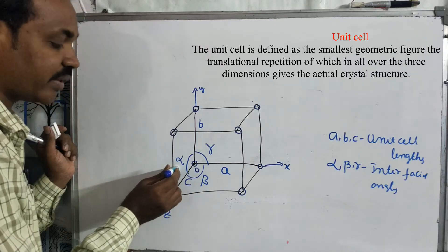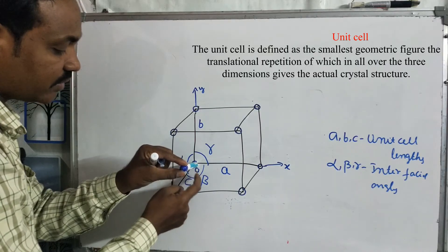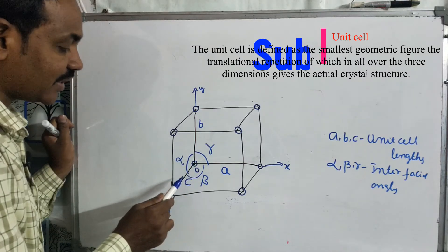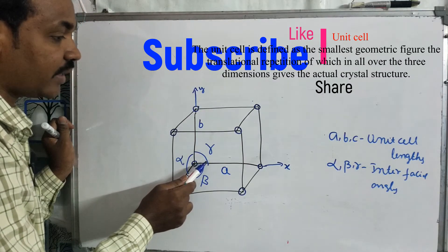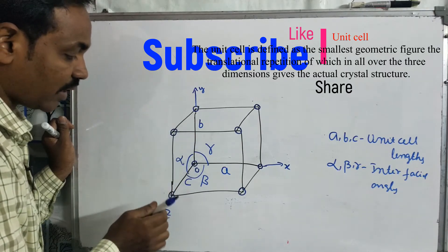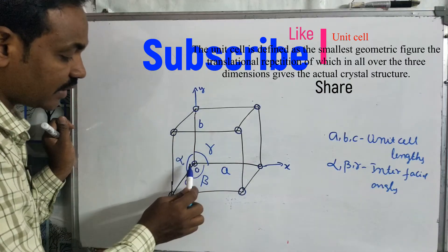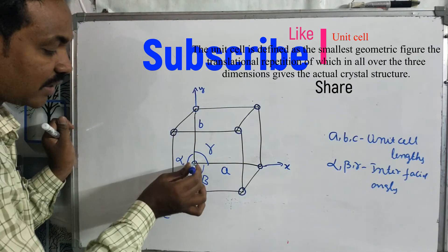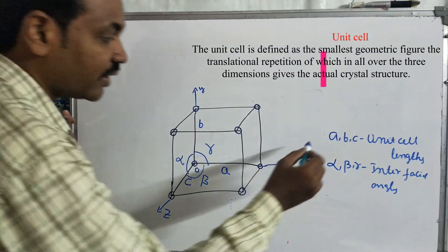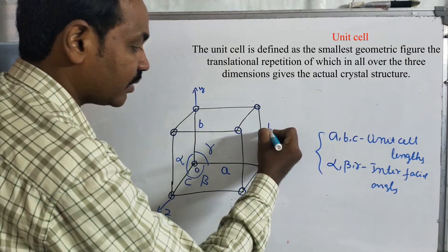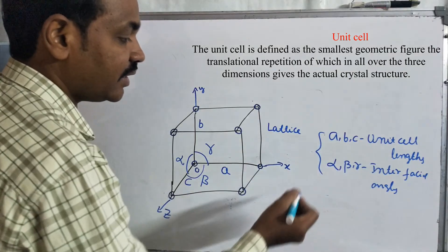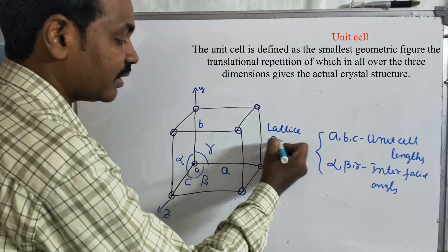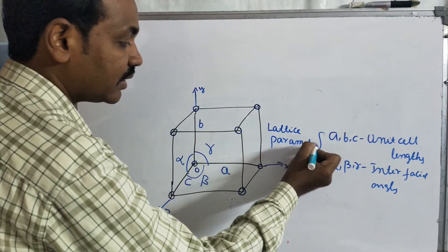We can draw this on the board. There is an angle for this — this angle will take the angle. This axis will take the angle. We can take the axis to the Y-axis. You can see beta and alpha. But gamma is more important. So alpha, beta and gamma are the angles. We have a combination of a, b, c and alpha, beta, gamma — this is the lattice parameter. The a, b, c are the unit cell lengths, and alpha, beta, gamma are the interface angles.